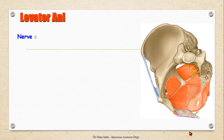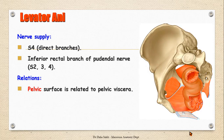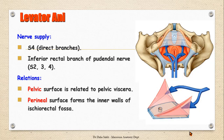The levator ani muscle is supplied by direct branches of the fourth sacral nerve, which supply the pelvic surface of the muscle, and also by branches from the second, third, and fourth sacral nerves through the pudendal nerve, called the inferior rectal branches, which supply the perineal surface. The levator ani is related by its pelvic surface to the pelvic viscera, including the rectum, the anal canal, the urinary bladder, and the internal genital organs. Its perineal surface forms the inner walls of the two ischiorectal fossae.